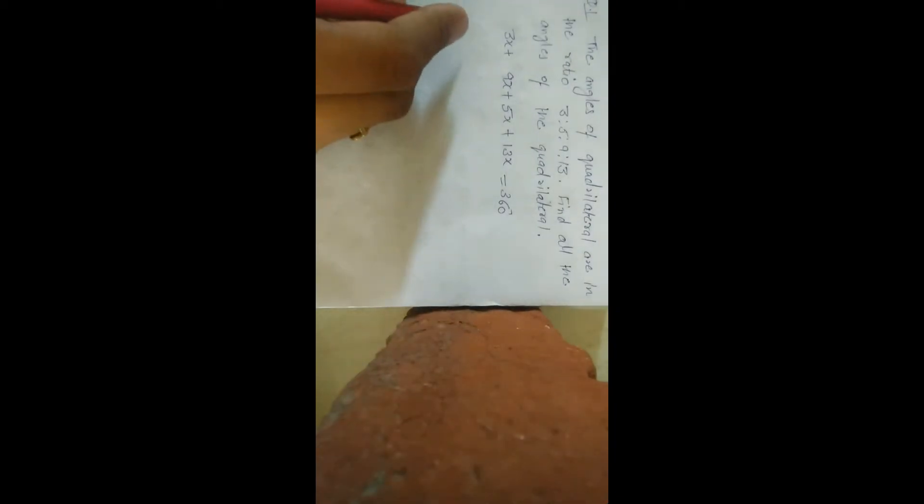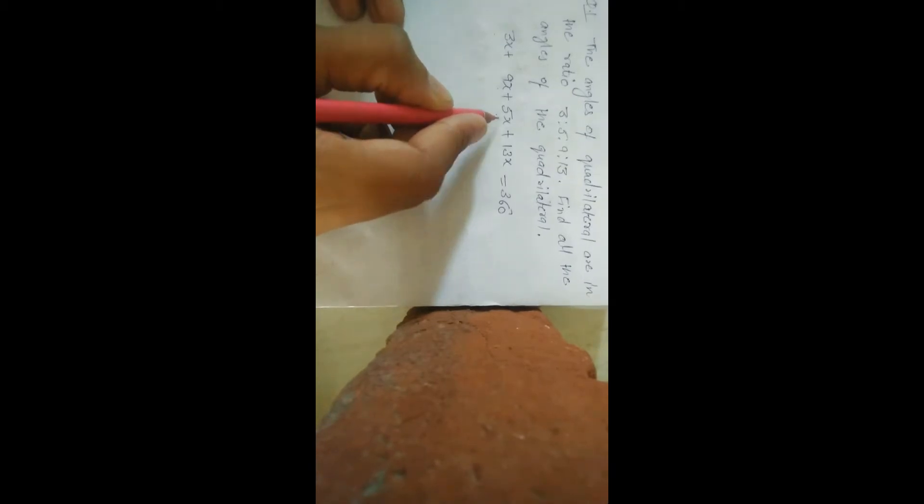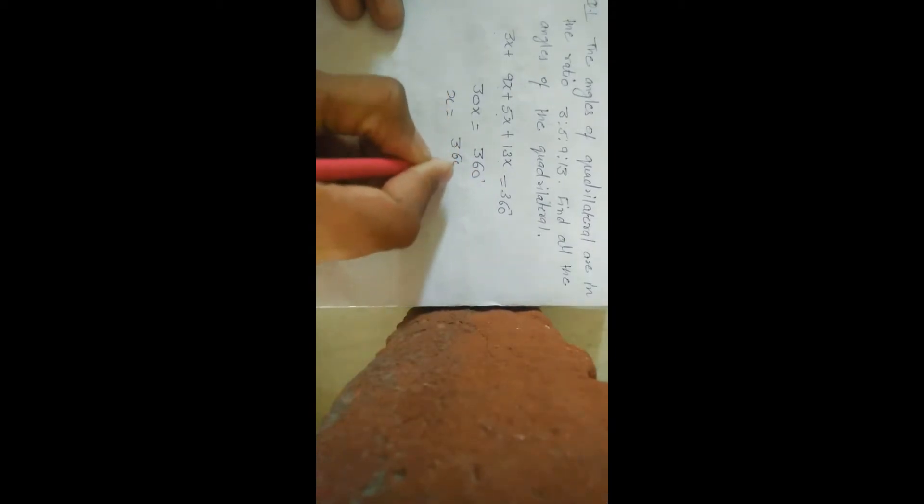Total is how much will it be? 9 and 3, 12, 12 and 5, 17 and 13. 30x is 360 degrees. X is 12.